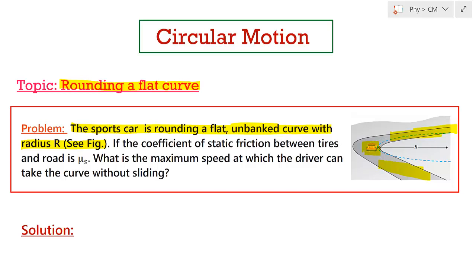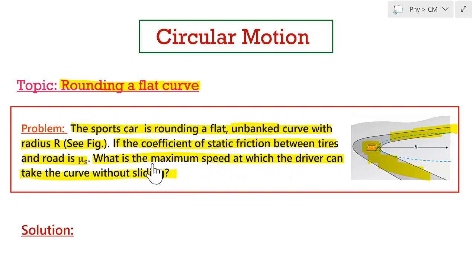The problem further states that the coefficient of static friction between the tyres and the road is μs. So friction is present with coefficient μs between the tyre of the sports car and the road. The question asks: what is the maximum speed at which the driver can take the curve without sliding? We need to find the maximum velocity so that the driver can take the turn without any sliding.